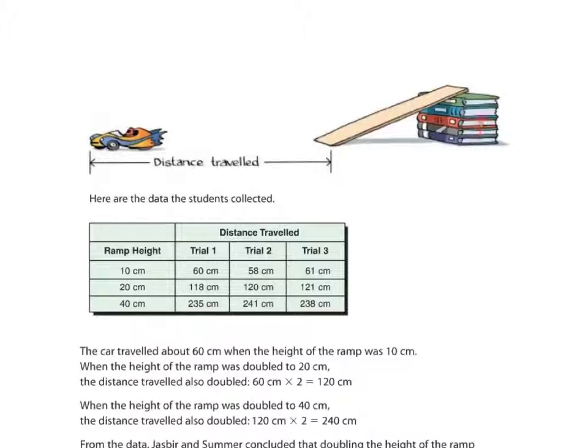So, as you can see, here's their ramp, or their height, and then they measured from the end of the ramp the distance the vehicle traveled. So, at 10 cm, trial number 1 was 60 cm traveled. Trial number 2, 58 cm. And trial number 3, 61 cm. So, about 60 cm is pretty average for the information we have here.